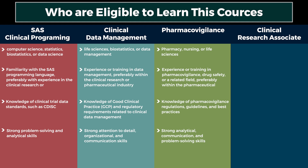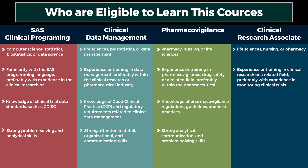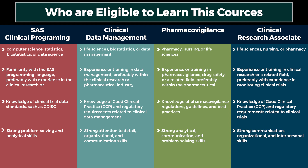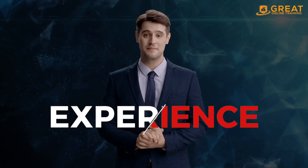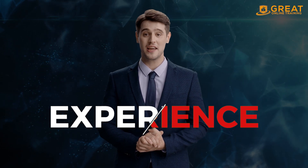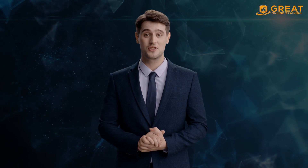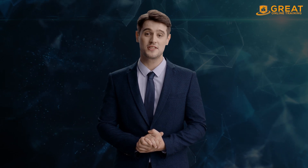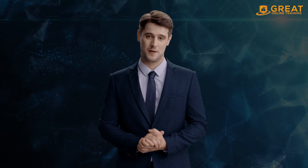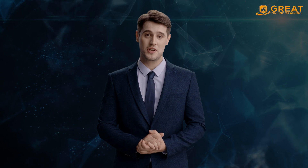For Clinical Research Associate (CRA): a Bachelor's or Master's degree in a relevant field such as Life Sciences, Nursing, or Pharmacy; experience or training in clinical research or a related field, preferably with experience in monitoring clinical trials; knowledge of GCP and regulatory requirements related to clinical trials; and strong communication, organizational, and interpersonal skills. Many positions require some level of experience in the specific role or a related field. Some professionals start in entry-level positions and work their way up, while others transition from other roles within the industry. Many organizations offer training and development programs. It's important to review job postings carefully to ensure you meet the desired qualifications.